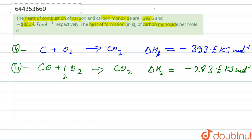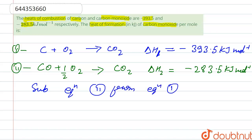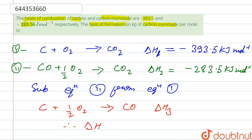We subtract equation 2 from equation 1. After subtracting, we get: carbon plus half of oxygen gives carbon monoxide. We call this delta H3.